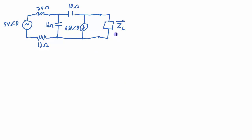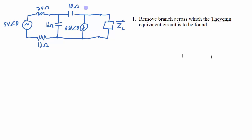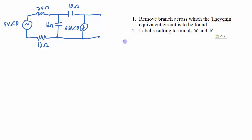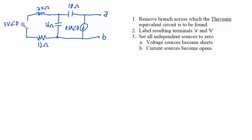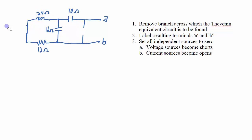Let's do an example. I've got this circuit with a load connected to it, and I want to reduce this part of the circuit to the Thevenin equivalent circuit — a Thevenin equivalent voltage in series with a Thevenin equivalent impedance. Step one: remove the branch across which the Thevenin equivalent circuit is to be found — that's this branch right here, so it is now removed. Step two: label the resulting terminals A and B. Step three: set all the independent sources to zero — all voltage sources become shorts, all current sources become opens.